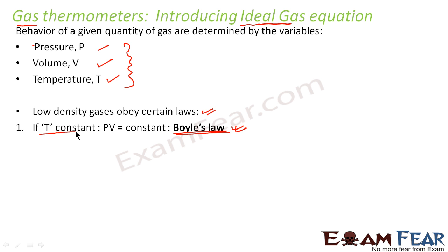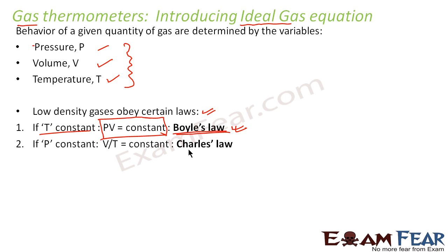Boyle's law states that if temperature is kept constant, then the product of pressure and volume is a constant. That means PV equals constant, so pressure and volume are inversely proportional — if pressure increases, volume decreases so that their product remains the same. The second law is Charles' law, which states that if pressure is kept constant, volume divided by temperature is constant, meaning volume is directly proportional to temperature.